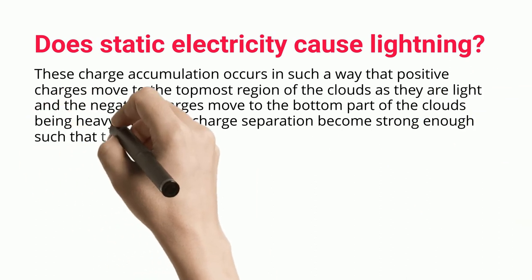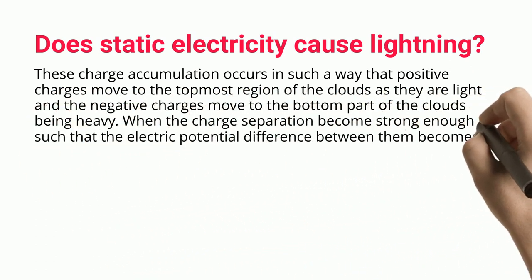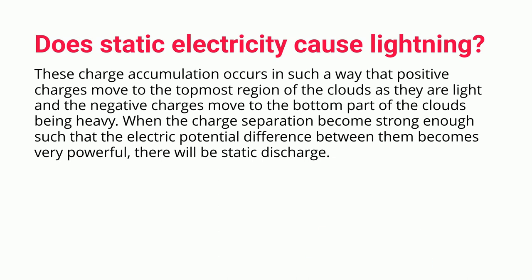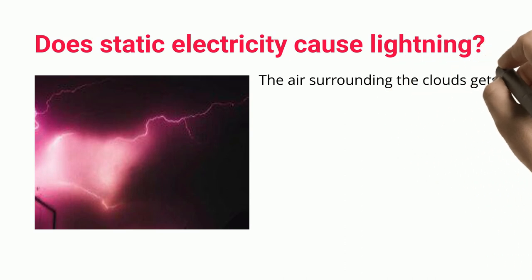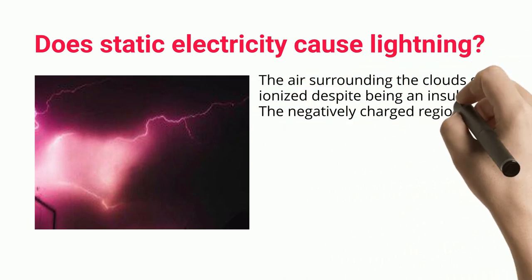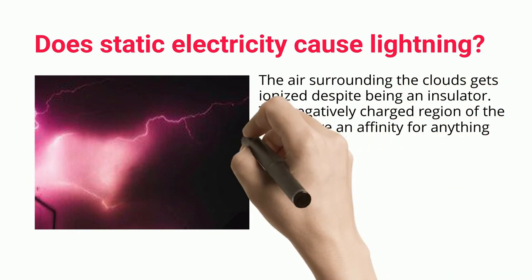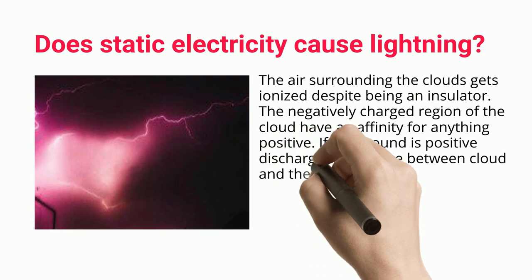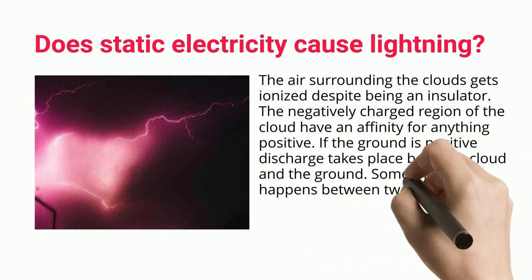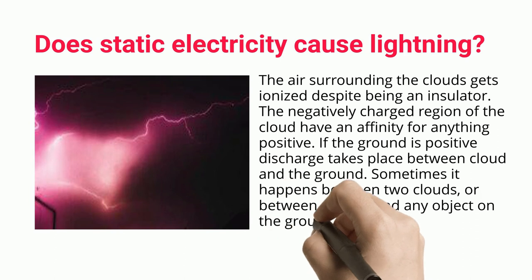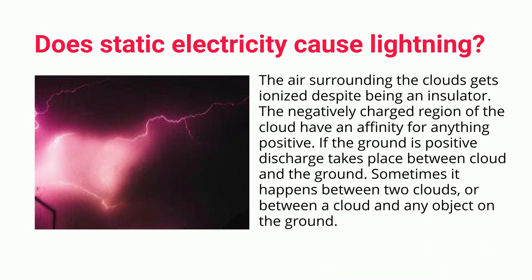When the charge separation becomes strong enough such that the electric potential difference between them becomes very powerful, there will be static discharge. The air surrounding the clouds gets ionized despite being an insulator. The negatively charged region of the cloud has an affinity for anything positive. If the ground is positive, discharge takes place between the cloud and the ground; sometimes it happens between two clouds or between a cloud and any object on the ground.